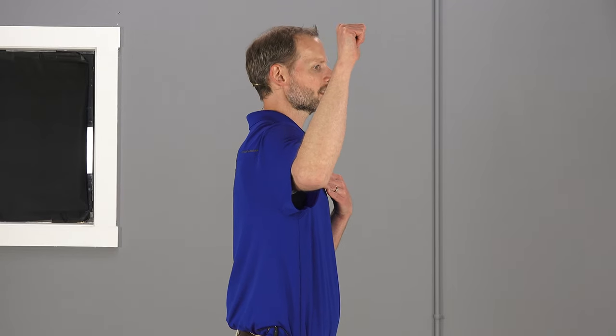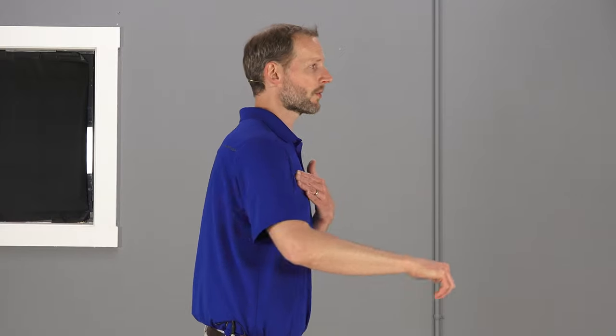Another sign that you have a tight pec minor is you have a limited external rotation. So it's best to actually do this on the floor, lay on your bed and just lay down and see where you are with this. Can you get full rotation backwards, full external rotation? Or when you lay down, is your arm like this? If you can't push into it and you feel a lot of compensation through your shoulder, it might be because your pec minor is really tight. So we want to look at these things.